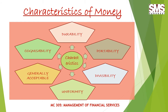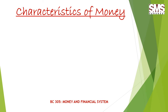So these are the major characteristics of money. First is durability. The second characteristic is portability. Third characteristic is divisibility. Next is uniformity. Next is generally acceptable. And the last one is cognizability. So these are the main six characteristics that I am going to discuss in detail one by one.